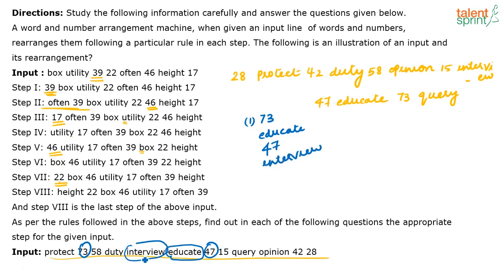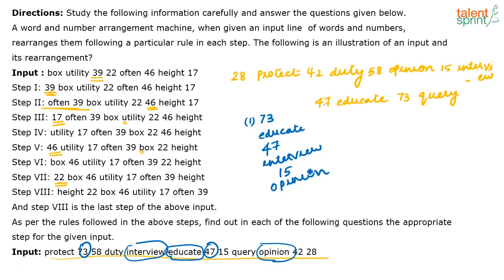Fifth step: the next odd number, which is 15. So counting: first step starts with 73, then educate, then 47, then interview, then 15. The next step will start with the next vowel word, which is 'opinion' (O). So step six starts with 'opinion.' Now all odd numbers are done, so we start with the biggest even number — 58. Step seven starts with 58, followed by the consonant word 'duty.'